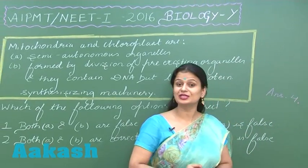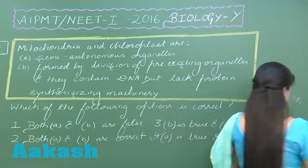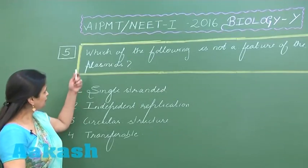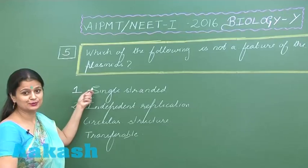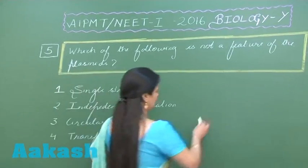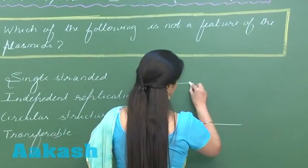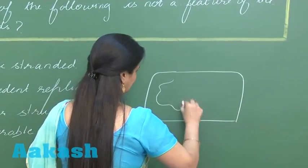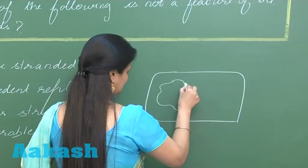Now let's discuss question number 5. Which of the following statement is not associated with the plasmid? Let's say this is a bacterial cell. In the bacterial cell, this is the main DNA.